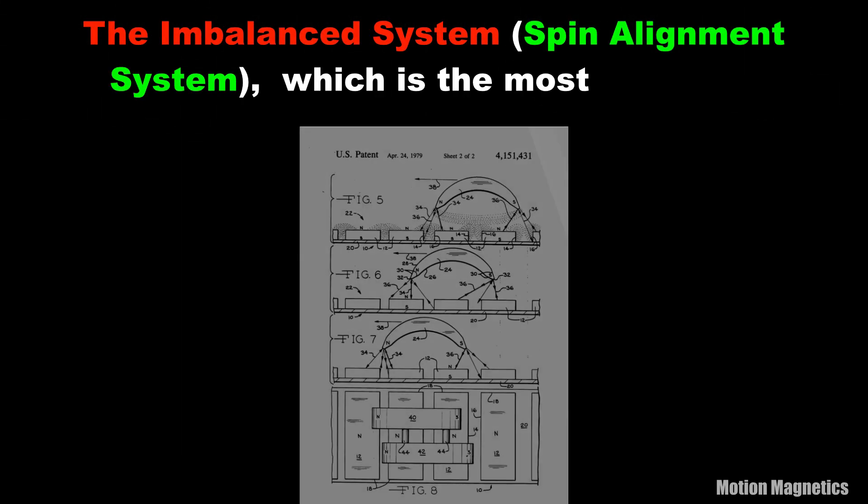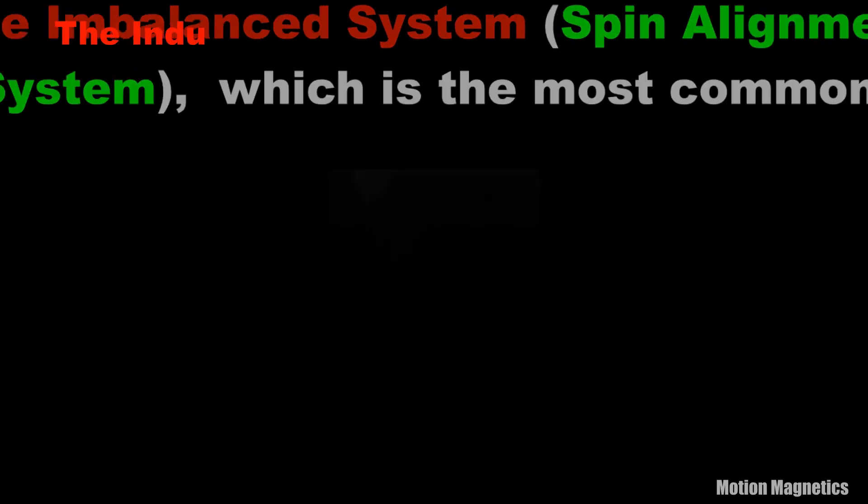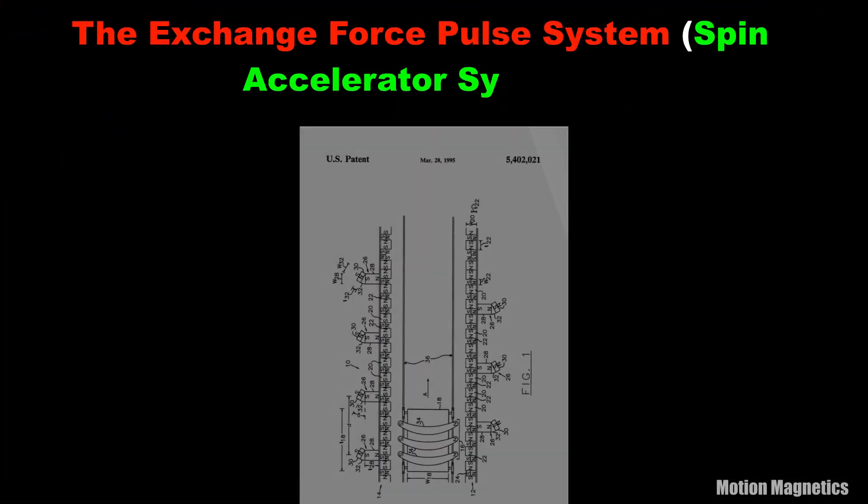The three types of magnetic motor systems are imbalanced system, which is the most common, the induction expulsion system, and the exchange force pulse system.